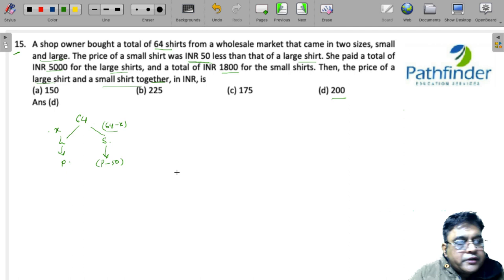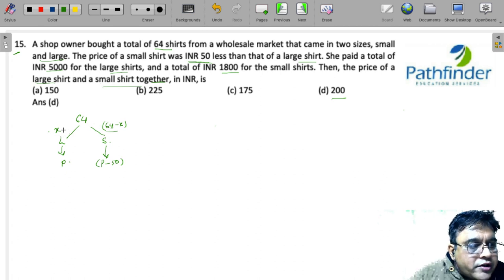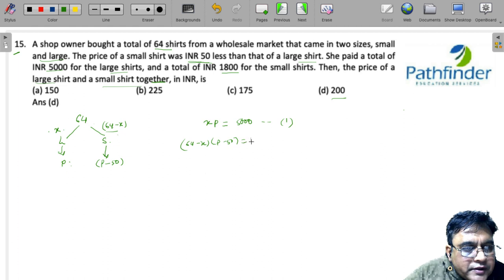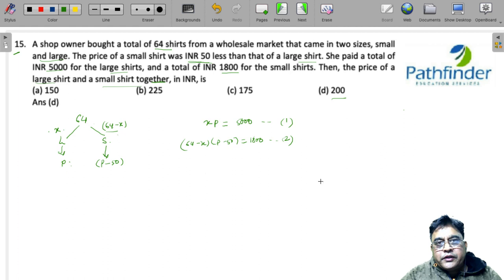So what does it mean? It means that the total paid for the large shirts, that is X into P, must be equal to 5000 rupees. This is equation 1. And the second equation is (64 minus X) into (P minus 50) is equal to 1800. So there are your two equations, and once we get these two equations we can easily solve them.